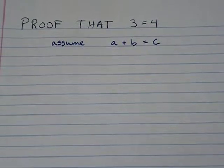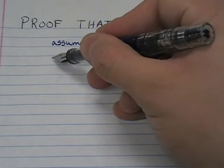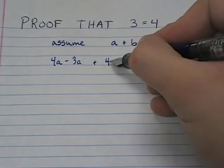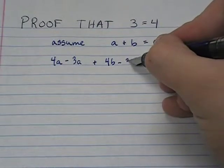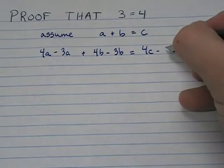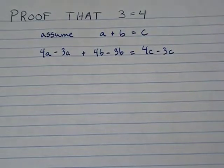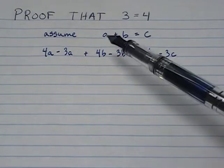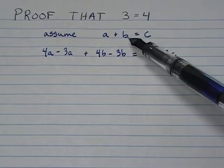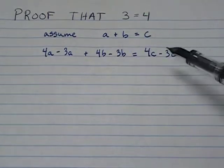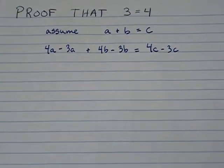Now we can rewrite this as 4A minus 3A plus 4B minus 3B equals 4C minus 3C. So let's make sure you're with me. If I said 4A minus 3A, I'd get A, 4B minus 3B, I'd get B, and 4C minus 3C, I'd get C. So A plus B equals C. All I did was rewrite the original statement.